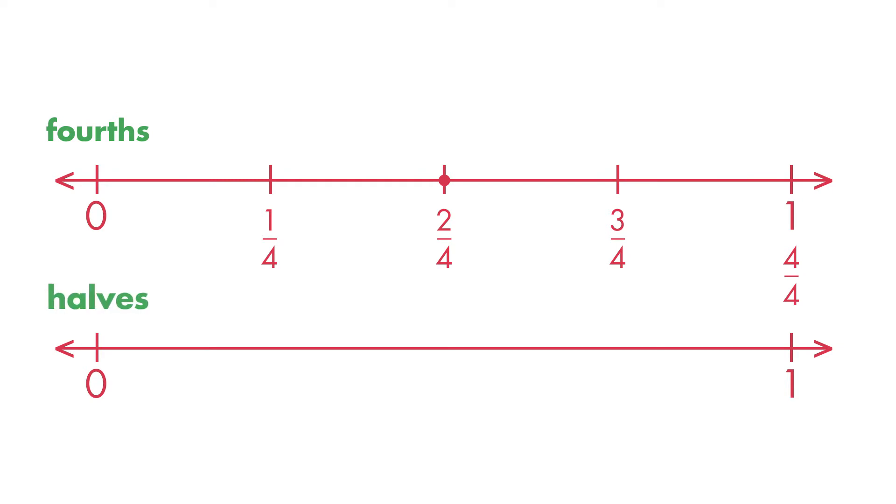Let's show halves on a second number line. Divide this number line into two equal parts, or halves. How many fourths cover the same amount of space as one-half? We can see that one-half is equal to two-fourths. You and your friend ran the same distance.